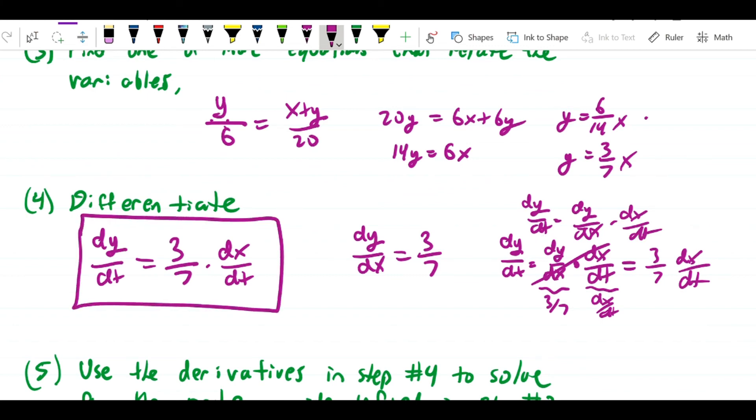But the point is that here we have... That's going to be the equation that we need. dy over dt equals 3 sevenths dx over dt.